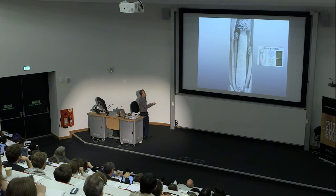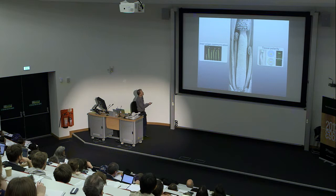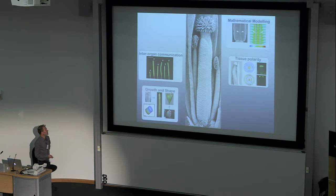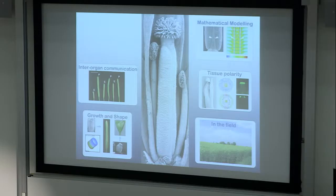Some of the projects we have undergoing in the lab are to understand how tissue polarity is formed during organogenesis, how organs communicate between each other, and also using mathematical modelling, be able to predict distribution of hormones during organ development and how this affects organ patterning. We also have projects aiming at understanding how growth in various dimensions is part of establishing the shape of different organs, and we believe that understanding all these processes will help us address issues especially in the very closely related Arabidopsis crop, oilseed rape.